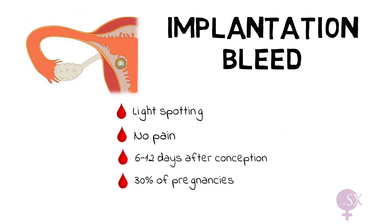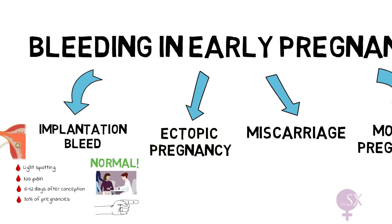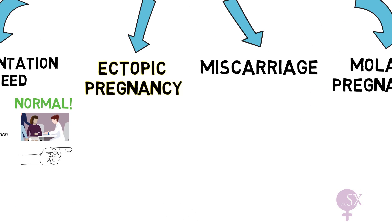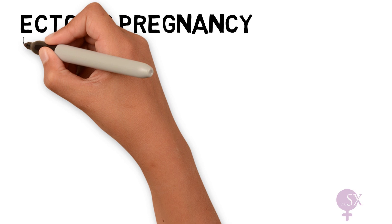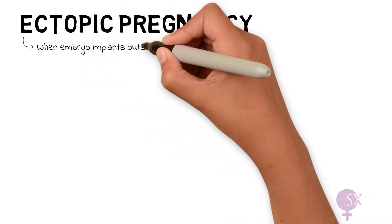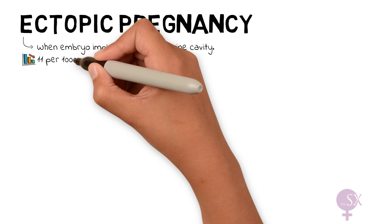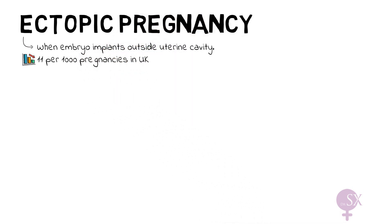This is normal, and it's very important to explain this to the patient and to reassure her. Moving on, we're going to be talking about ectopic pregnancy. An ectopic pregnancy is when an embryo implants outside the uterine cavity, and it occurs in 11 per 1,000 pregnancies in the UK.